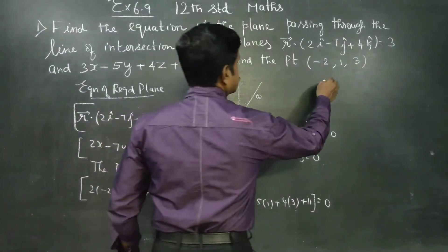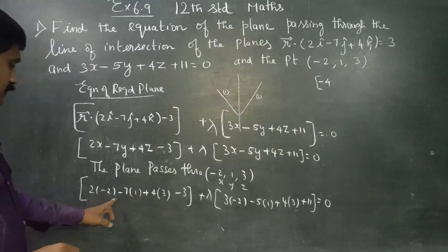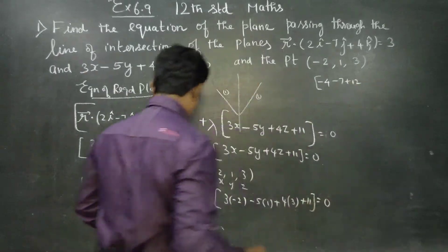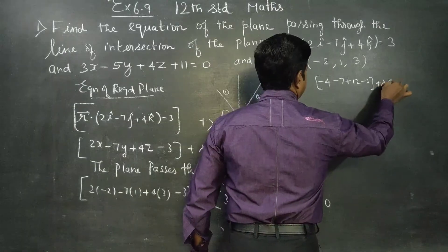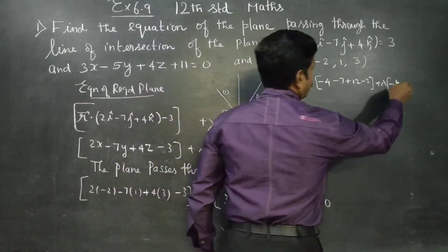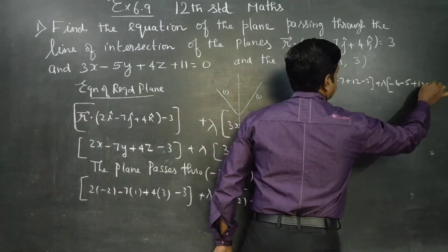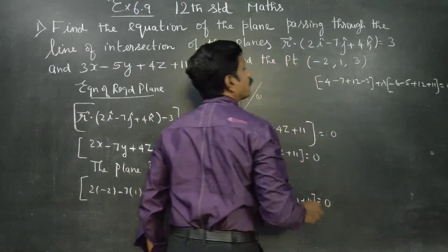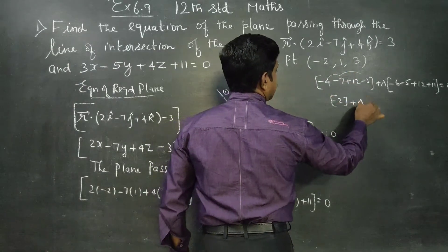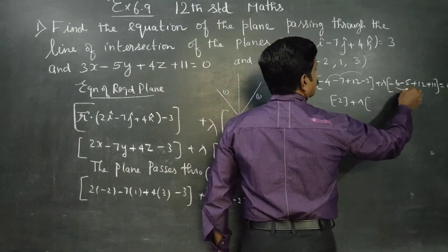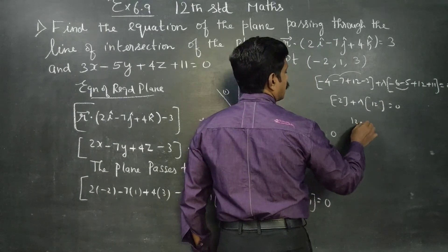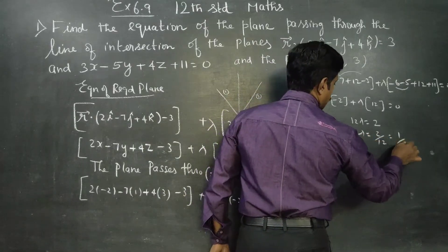Minus 4 minus 7 plus 12 minus 3 plus lambda into minus 6 minus 5 plus 12 plus 11 is equal to 0. Simplifying: minus 2 plus lambda into 2 equals 0. Therefore lambda is 1 by 6.